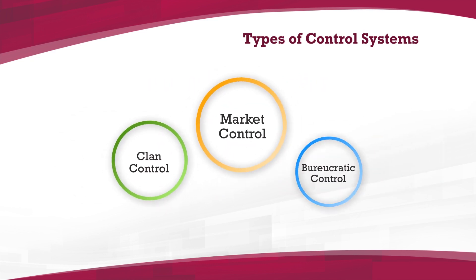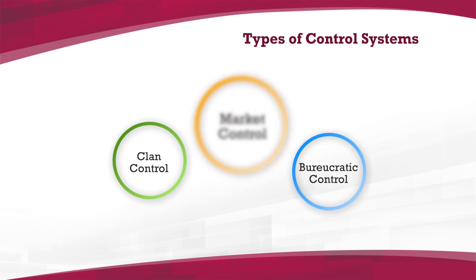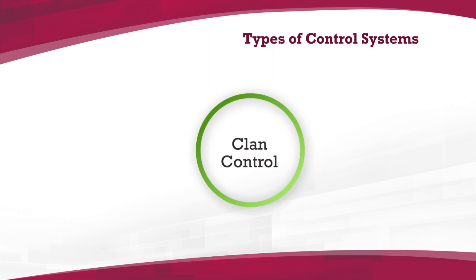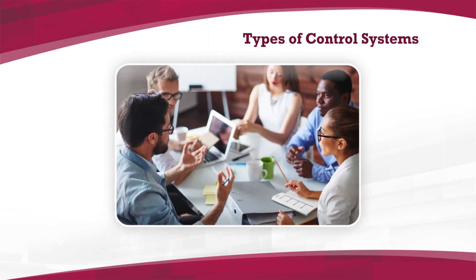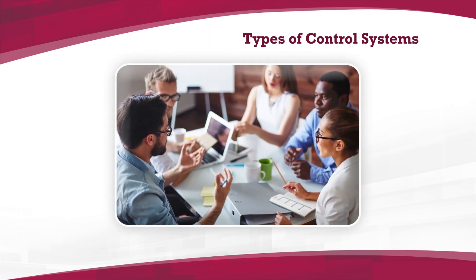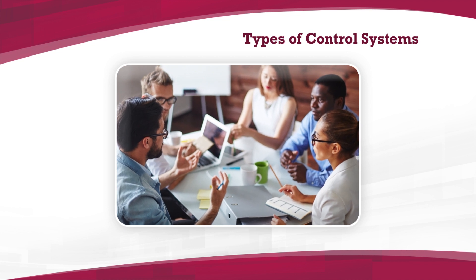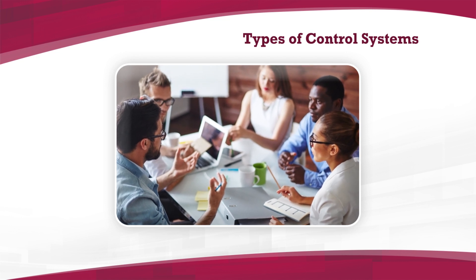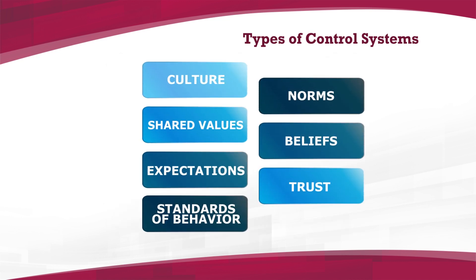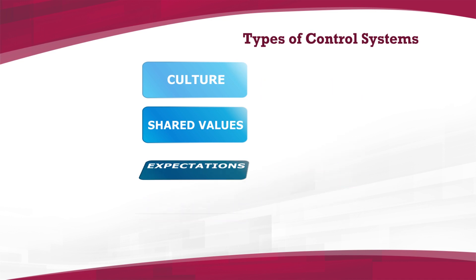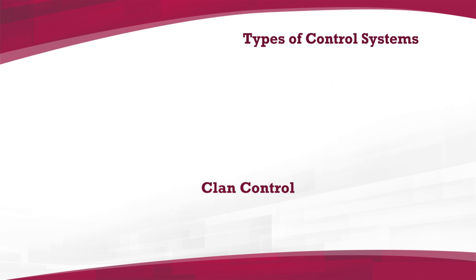Clan control is dependent on the culture of a group of people. It relies on the norms and values of a group that results in shared expectations. It is an informal control compared to bureaucratic control, but more malleable than market controls as culture can be changed.